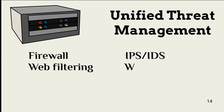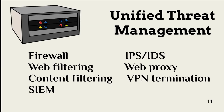Unified threat management, or UTM, devices combine multiple capabilities needed to protect network perimeters and network segments. This can reduce costs and simplify management. Security safeguards that can be found in a single UTM device include firewall, IPS/IDS, web filtering, web proxy, content filtering, VPN termination, and SIEM or log management.